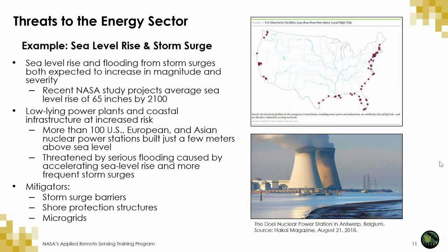Sea level rise and storm surge are other threats that can impact low-lying power plants and coastal infrastructure. More than 100 nuclear power plants are built just a few meters above sea level in the U.S., Europe, and Asia. Climate change is accelerating sea level rise with more frequent storm surge. Again, there are various technology and infrastructure mitigators, and Earth observations can support weather and climate monitoring and planning.